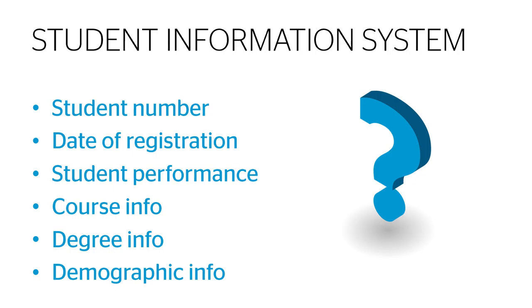A further key source of information is the Student Information System. Again, this is something that every university has — it's often owned by the registrar's office. It contains basic information about the student as a person: it provides the student number, tells us the date of registration, tracks the student's performance, and gives us the formalities of the courses that have been passed and the eventual award of the degree or qualification.